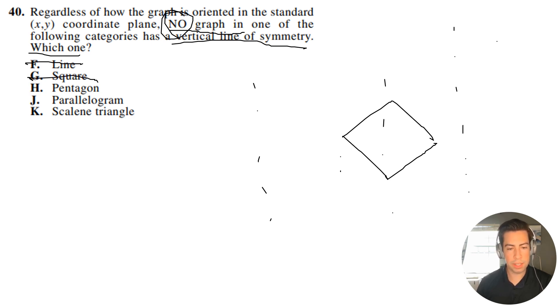So what about a pentagon? A pentagon is going to look something like this, and we can orient it like that, or we can orient it like this. We can basically orient it any way we want. We're still going to get symmetry. So that one's out.